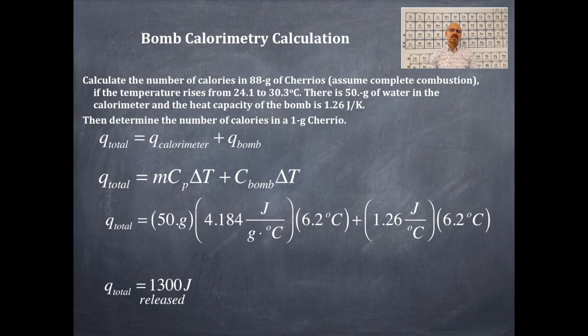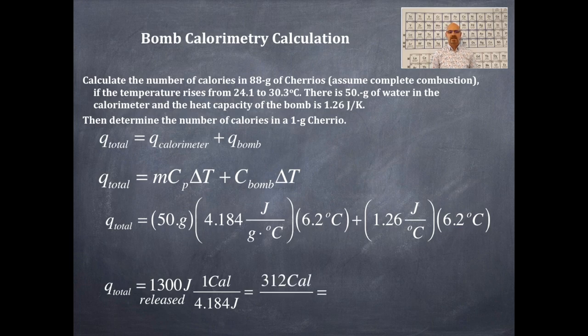This is the amount of energy that's released because this is a combustion reaction, so that means that this is actually a negative value. So I could say negative 1,300 joules or just 1,300 joules released or liberated. So that word released lets me know that that's a negative value if I didn't have the word there. We need to convert this into calories, and the calorie to joule conversion is right there. That is the specific heat of water. And now that is 312 calories within those 88 grams of Cheerios.